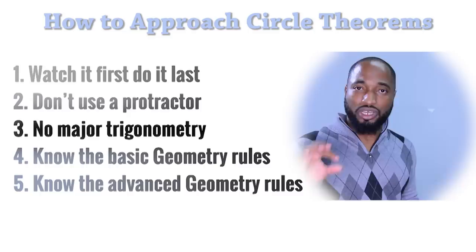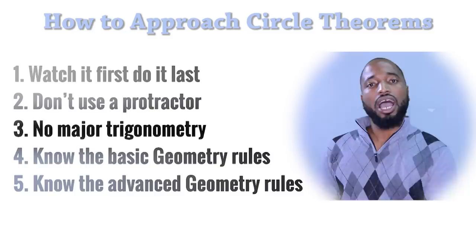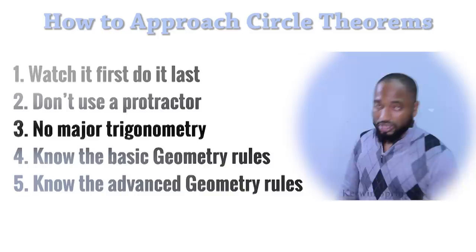Because it is not drawn to scale. The diagrams are not drawn to scale, so you can't use a protractor. If you use a protractor, you will get the wrong answer. They specifically mess up the way they draw that diagram so you won't get the correct thing. And also, they expect you to use your rules, so don't use a protractor. Number three, there is no major trigonometry in this, so don't expect to whip out your sine rule and cosine rule.